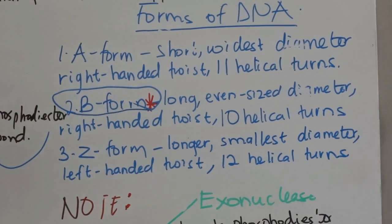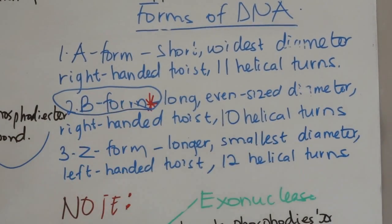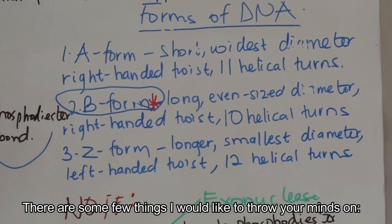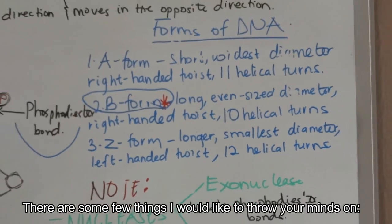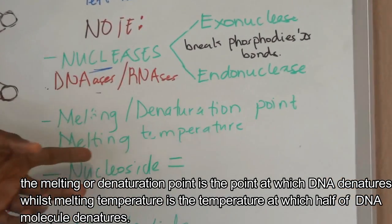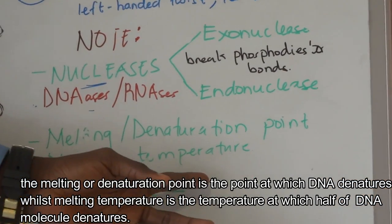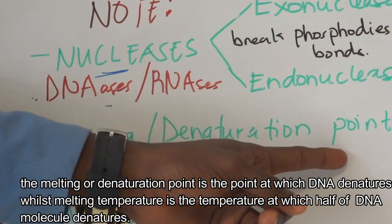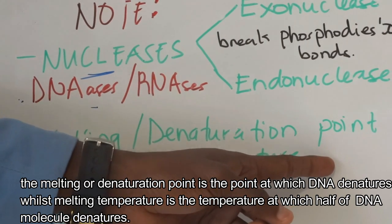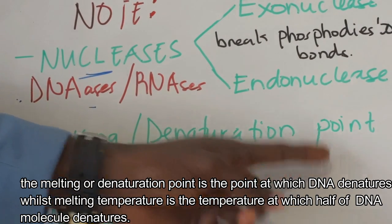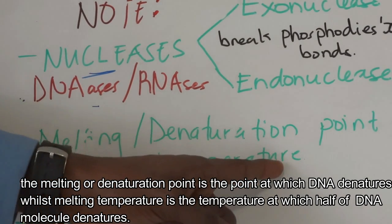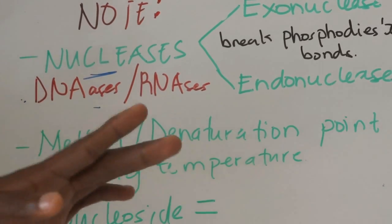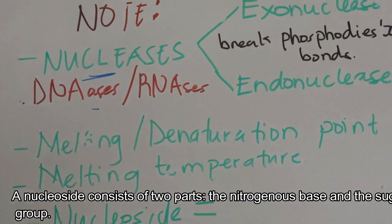The most commonly used form of DNA is the B form, so anything about DNA we are mostly referring to the B form. Also note: the melting or denaturation point is the point at which a DNA molecule denatures, whilst the melting temperature is the temperature at which half of the DNA molecule denatures.